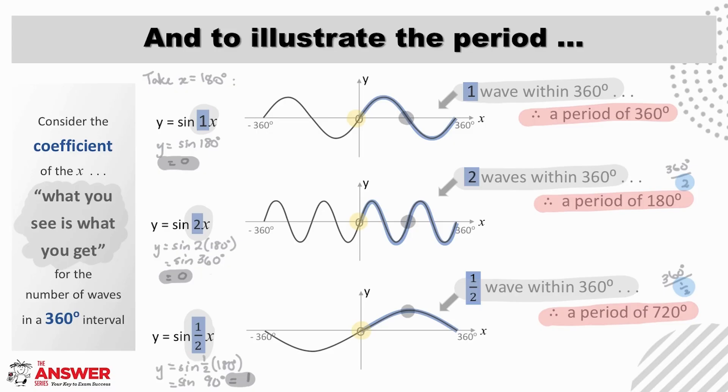If we think now of cos and tan as well, the period of cos behaves similarly to sine, but again tan is different, and it's different in that its standard graph completes a full wave within 180 degrees, and so tan's standard period is therefore 180. It is just the starting point, however, that is different for tan. Otherwise, calculating the adjusted period for tan follows the same logic.